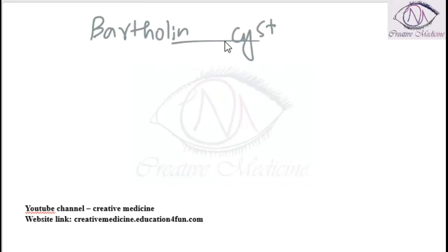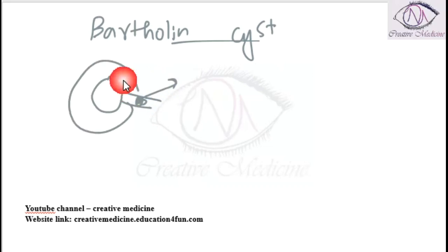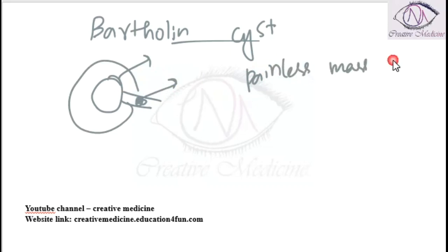Bartholin cyst is the obstruction of the Bartholin gland, which results in Bartholin cyst. The patient presents with intermittent painless mass over the vulva, and the mass is aggravated by intercourse and resolves on its own.